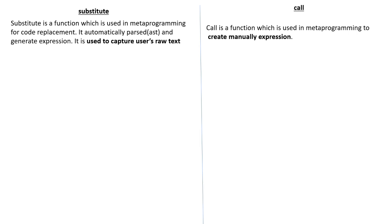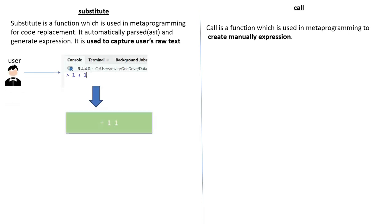The substitute function is used to capture the user's raw text — the raw expression entered by the user in the R console. You use substitute to capture the code and capture the unevaluated expression. After that you send this captured code to the R evaluator to evaluate it, and finally you get the result.